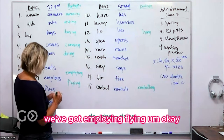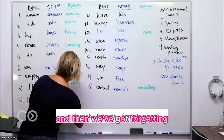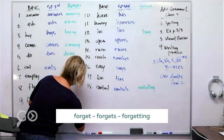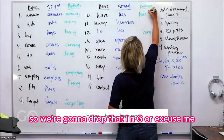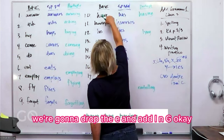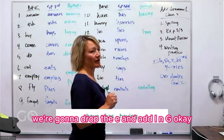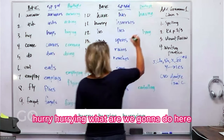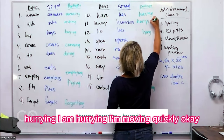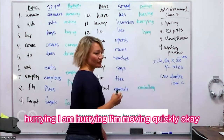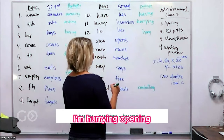We've got 'employing,' 'flying,' and then 'forgetting.' 'Have' goes to 'having' — we drop the E and add I-N-G. Then 'hurry' → 'hurrying.' What are we doing? 'I am hurrying' means I'm moving quickly. And then 'opening.'